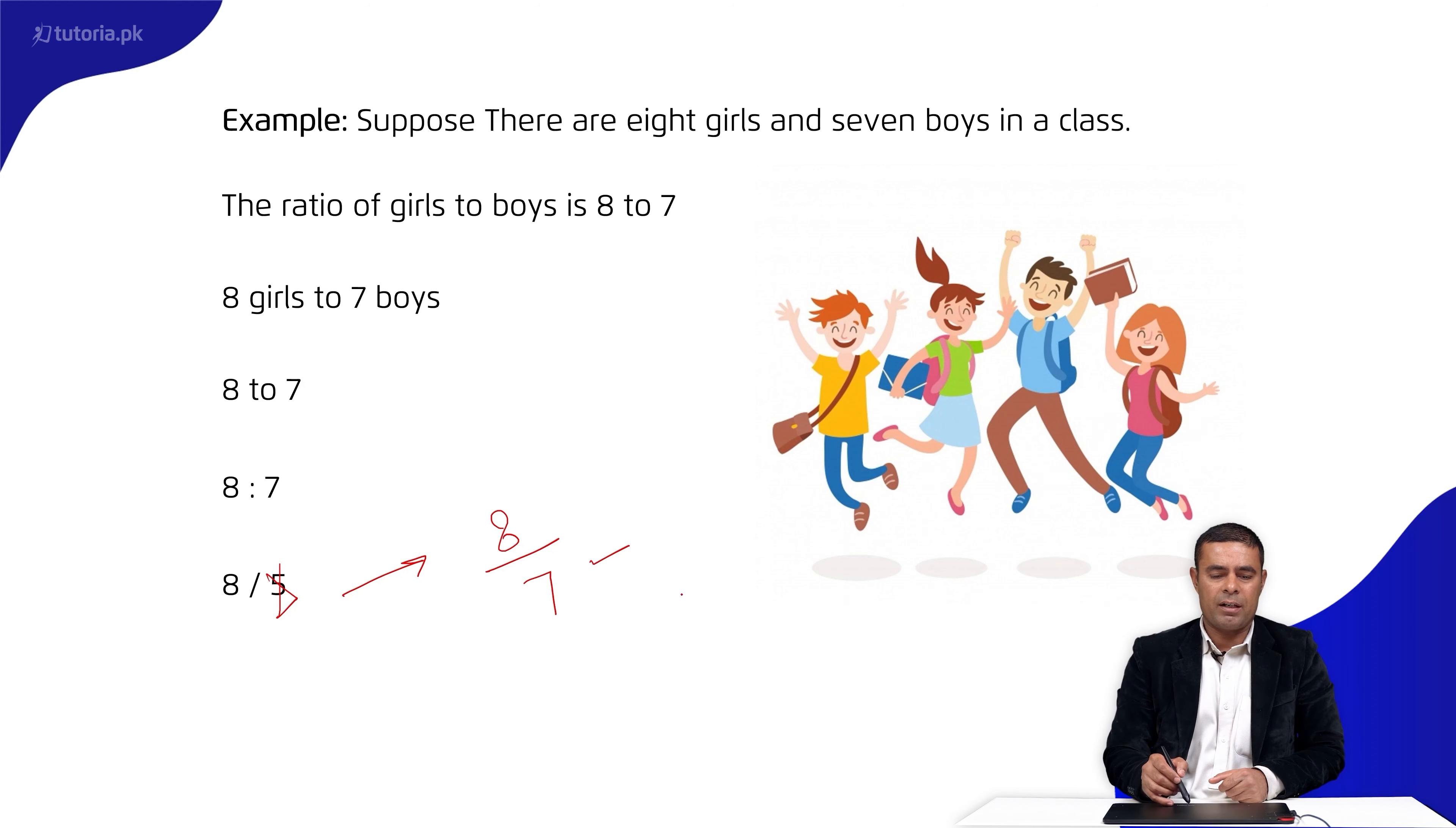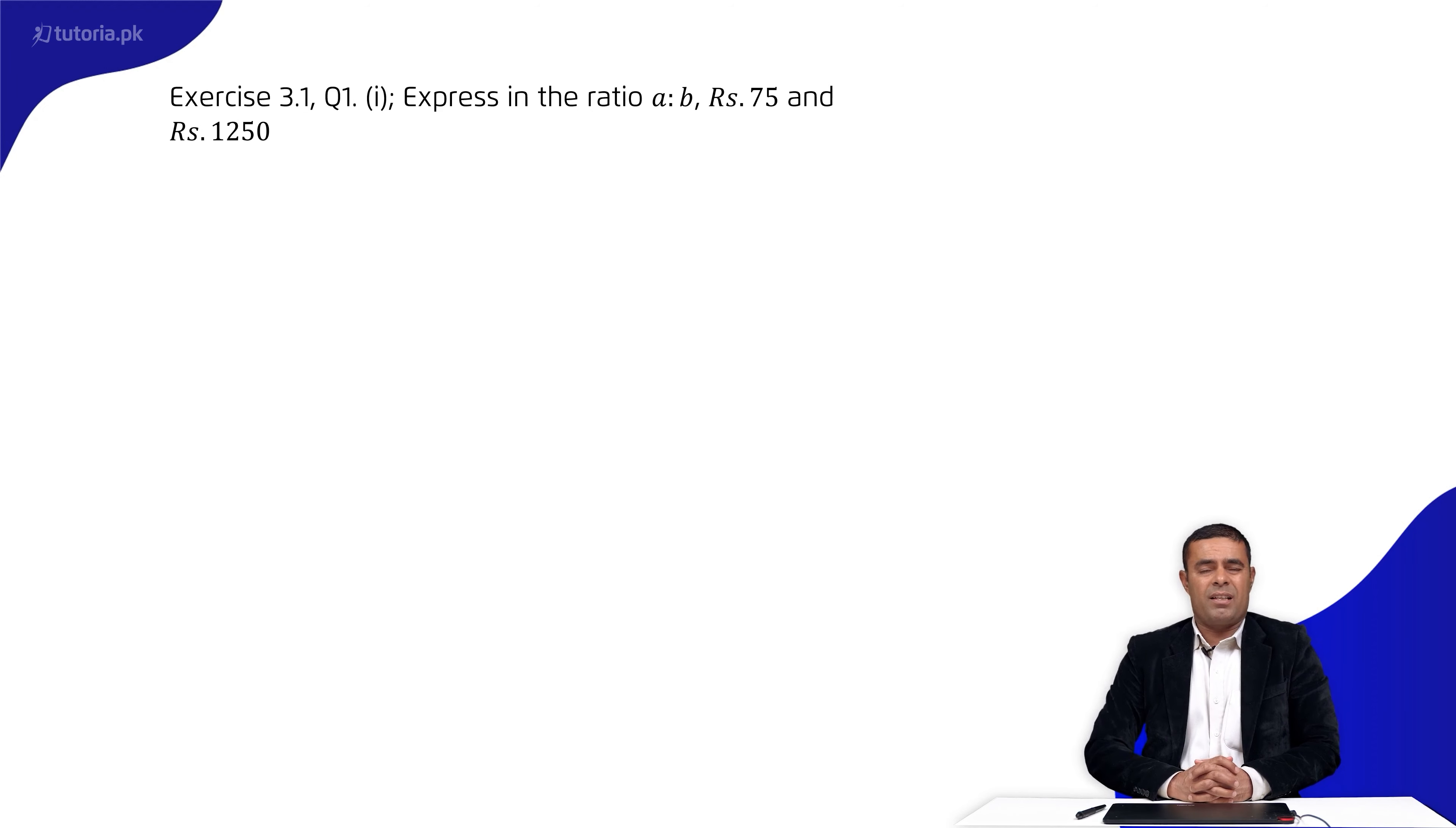Now if it's boys to girls, the order changes. Boys to girls is seven ratio eight, or seven over eight. This is the fraction form.